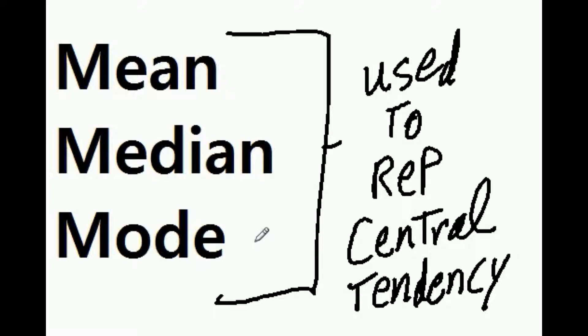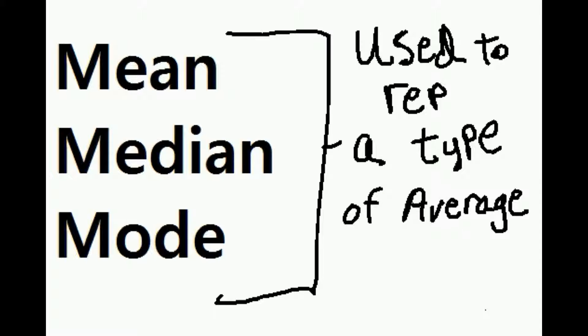Mean, median, and mode are used to represent central tendency. They are used to represent a type of average.